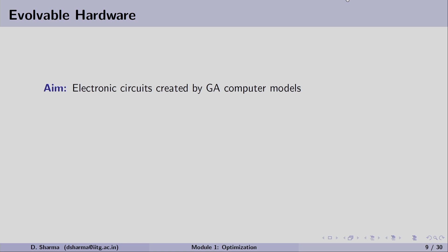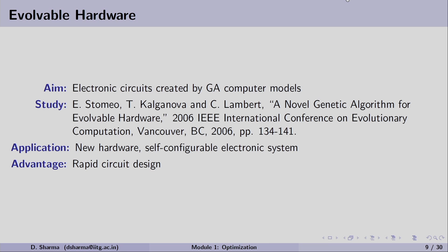Another interesting application is evolvable hardware. The aim is to create electronic circuits using a GA model. These scientists worked on this problem back in 2006, using GA to evolve hardware. The application of this approach is the creation of new, self-configurable electronic systems. Evolutionary computation may give you a design which may look simple but is not yet available. Some new, simple designs can be evolved by evolutionary computation, enabling rapid circuit design.